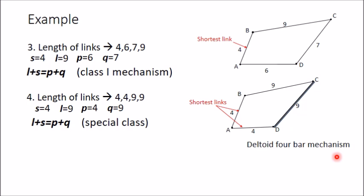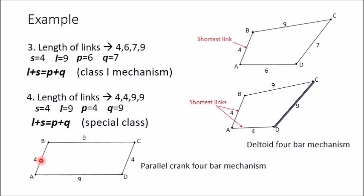The second possible configuration is the parallel crank four-bar mechanism, where the same-length links are not connected together. This is a special class in which, whatever link you fix, you always get a double-crank mechanism. All four inversions — fixing AB, fixing AD, fixing BC, or fixing DC — always result in double-crank mechanisms.